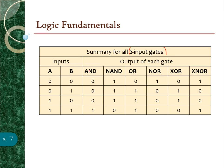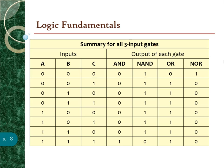This is a summary for all two-input gates. When A and B are both zeros for AND, the output is zero. For NAND, it is inverted so it becomes one. For OR, both zeros give zero; for NOR, it becomes one. For XOR, identical inputs give zero; for XNOR, it becomes one. You can study the remaining combinations based on the fundamental logic. This is also a summary for all three-input gates.